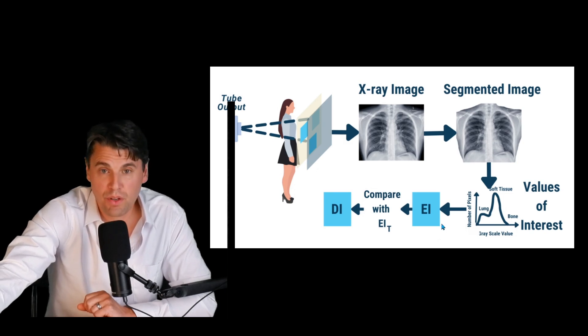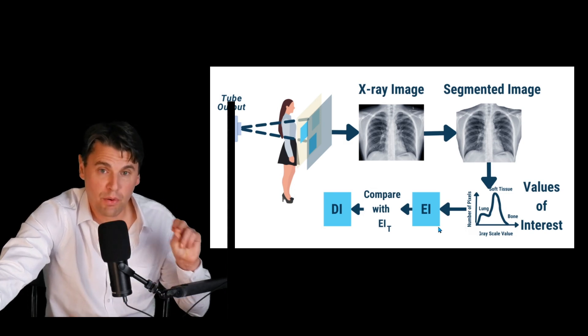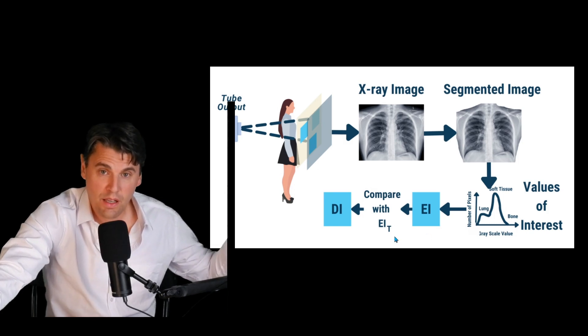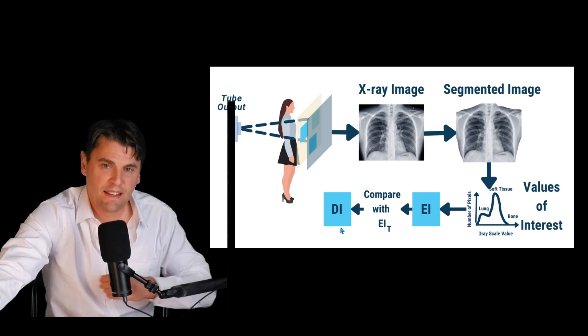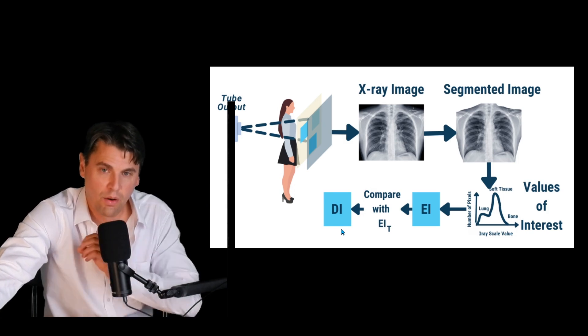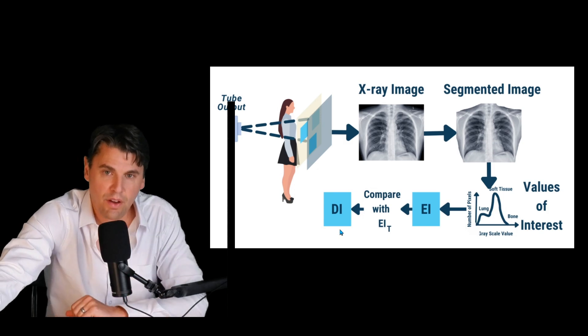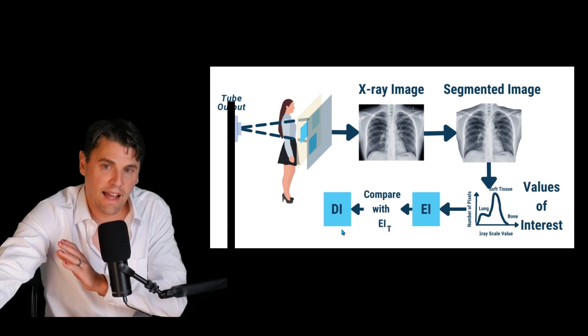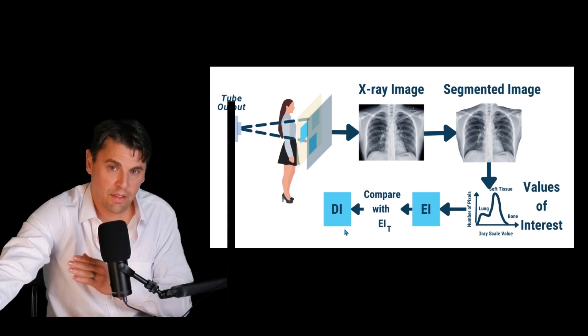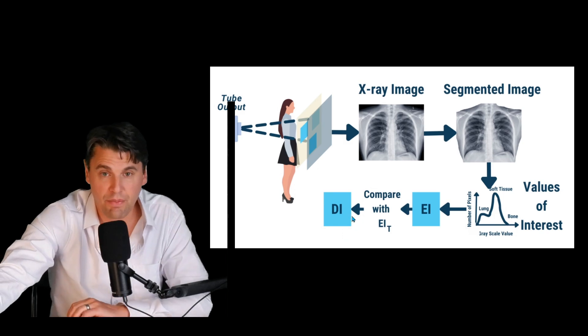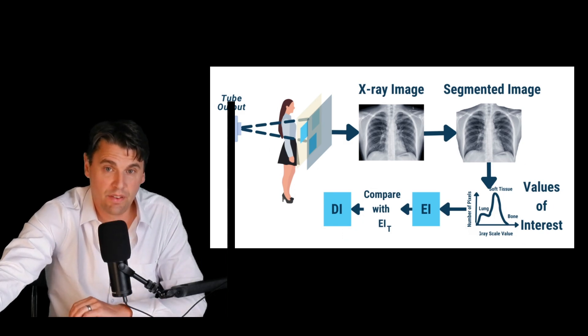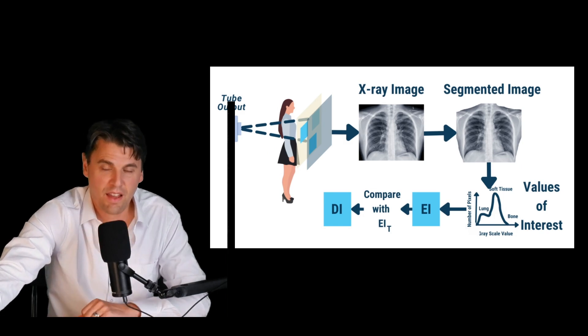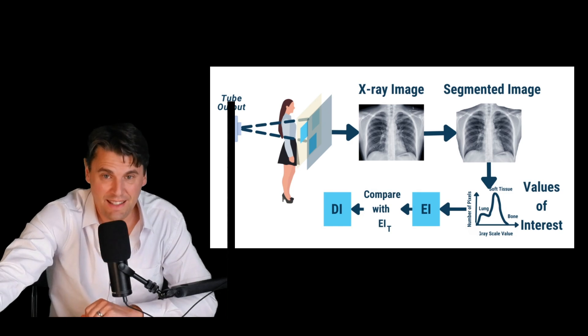Then from the exposure index, we can compare that exposure index with a targeted exposure, and we can get what we call a deviation index, or a relative deviation that we have from our target. But just at a high level, in replacing the built-in exposure monitoring on film, we now have a system of doing monitoring of the exposure index and talking about something called the deviation index.